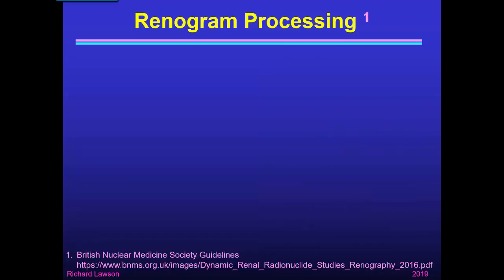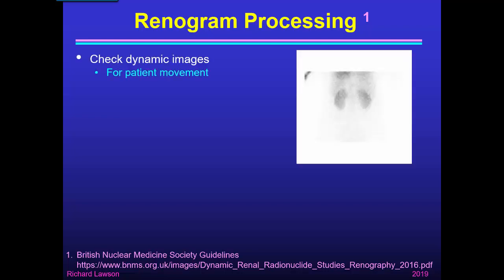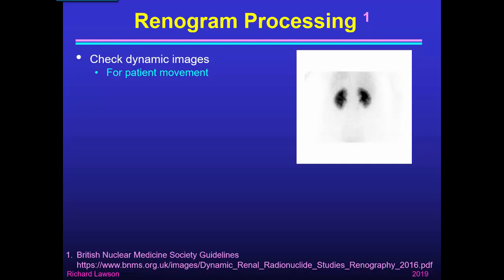The steps in renogram processing depend on the nuclear medicine system being used. The basic steps described here follow the guideline from the British Nuclear Medicine Society, though individual computer procedures may differ slightly. We start by checking the dynamic images acquired by the gamma camera — one image every 20 seconds, shown here speeded up — where we can see activity starting in the kidneys, draining down the ureters, and appearing in the bladder. We check the anatomy and verify that the patient didn't move during the study. Then we create a summed image of the full dynamic study to make it easier to draw regions of interest.